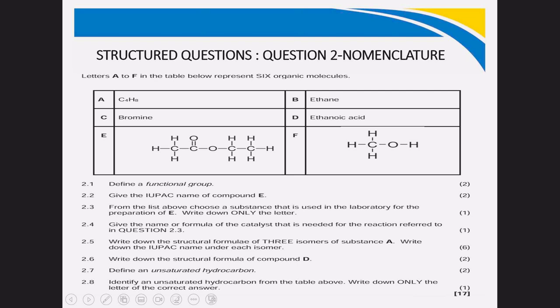I am having two versions of question number two. The first one is extracted from September 2022 and the second one is extracted from June 2024. For September 2022, from Gauteng province, I want to emphasize something. As you are preparing for your final examination, you must have the examination guidelines. This is your Bible. We take definitions as they are from the examination guidelines.